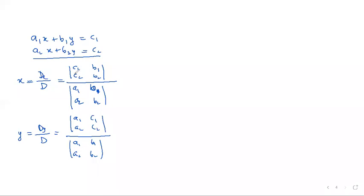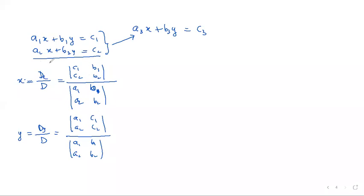To understand why determinant = 0 implies consistency: solve the first two equations by Cramer's rule to get x and y. If the third equation is also satisfied by this solution, then the three equations have a common solution and are consistent. So the solution of the first two equations must satisfy the third equation — that's the condition for consistency.